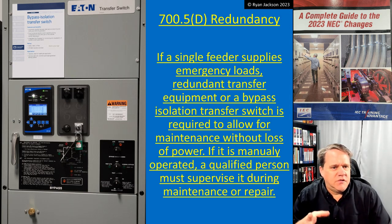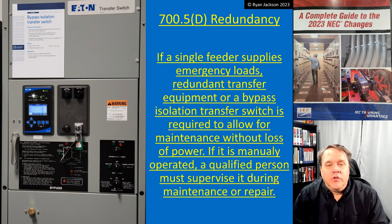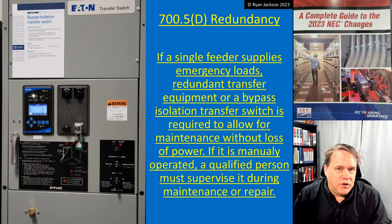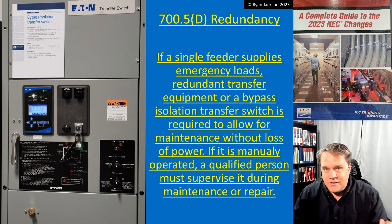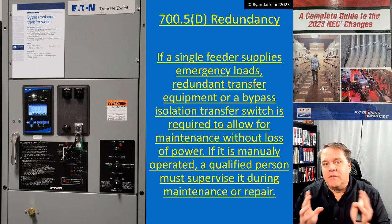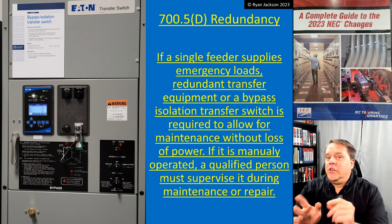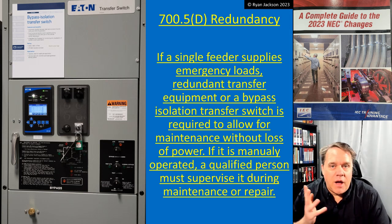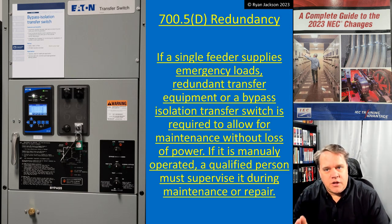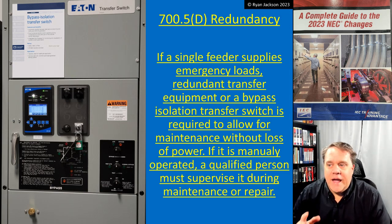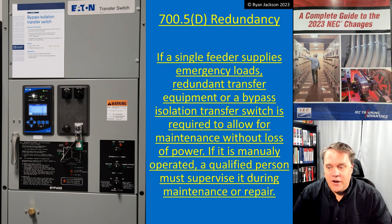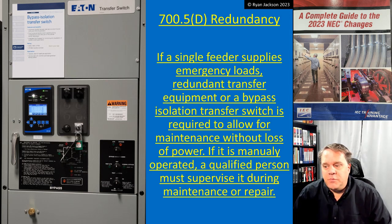This is kind of similar because transfer switches often will need maintenance as well. For the same reason, if I'm maintaining my transfer switch when the utility loses power, we can't risk the lives of all the building occupants. We have to have redundant transfer equipment, or what the code is really nudging you toward: a bypass isolation transfer switch. It allows you to maintain the transfer switch without taking it offline or doing it unsafely — working on a live transfer switch would violate OSHA, NFPA 70E, and just be a bad idea.